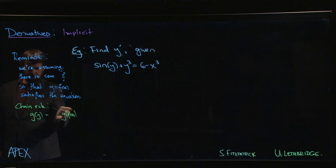And so this is a composition and we know how to take derivatives of compositions. Chain rule says the derivative of g of f of x is g prime at f of x times f prime of x.